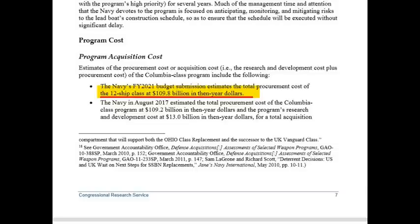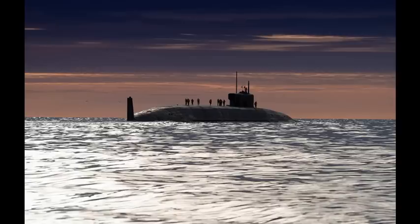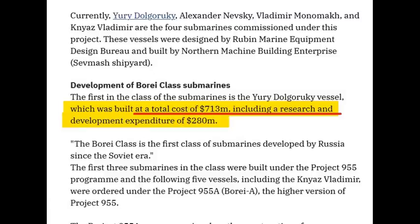Now look at this — the Borei-class submarine of the Russian Navy. Five are already afloat, more are being constructed. The cost of the first boat was a total of $713 million, including research and development expenditure of $280 million.